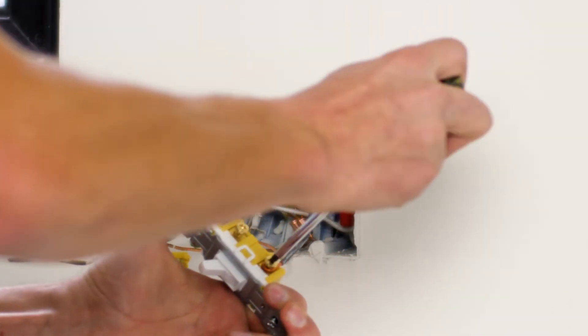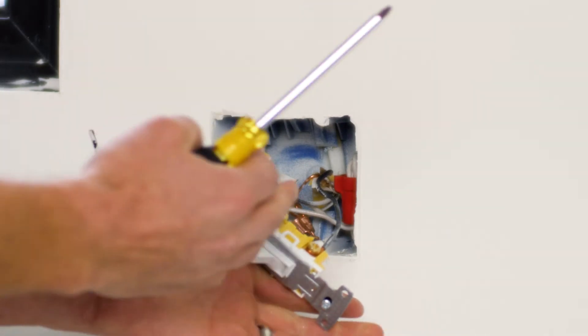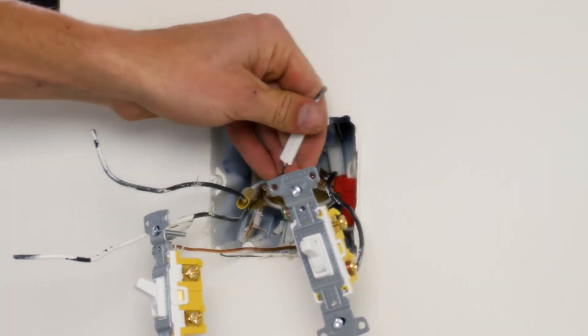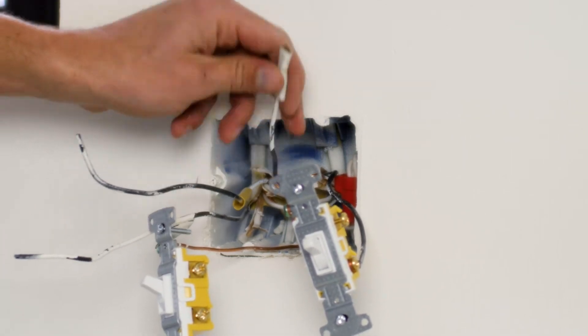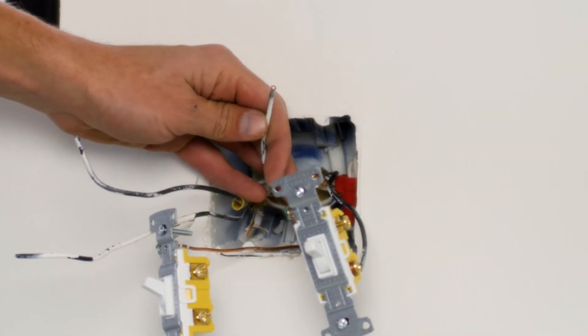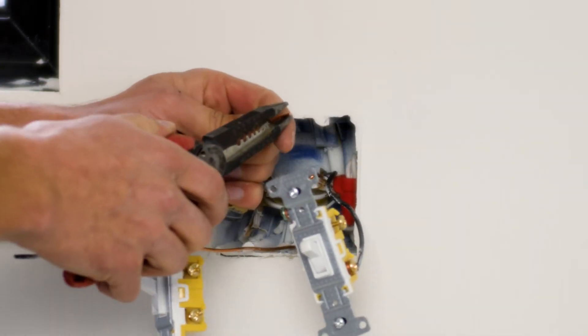And again, I'm going to terminate my ungrounded conductor, my hot conductor, to either of the two screws. I've taken off that label that's been primed over. I'm going to terminate my other switch leg.